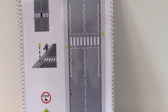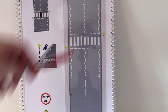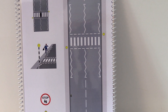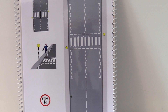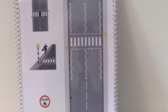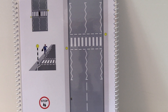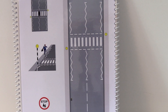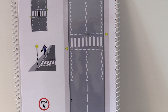The white zigzag lines are clearly marked out before the pedestrian crossing. They mean you're approaching the crossing and you're not allowed to park or overtake — no parking, no overtaking in the areas marked by white zigzag lines. If you see yellow zigzag lines, that means you're approaching or outside a school or a fire station.